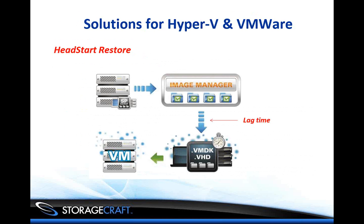Another solution for Hyper-V and VMware is Head Start Restore. It follows this process: it takes the ShadowProtect backup and pushes it to our image repository, which is ideally managed by our Image Manager technology where it will be verified. What then happens is that with Head Start Restore, we can actually push this image into either a VMDK, a VHD, or a VHDX. We can do this automatically — every time an image comes into Image Manager, it will be pushed into the VMDK, VHD, or VHDX for use in a Hyper-V or VMware environment.